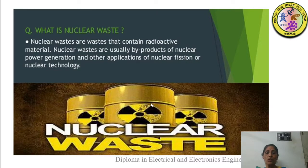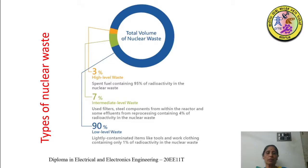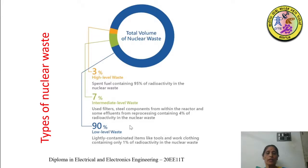This is the symbol for nuclear waste. You can see the total volume of nuclear waste represented here. You can see the blue bag — that is the low level waste. 90% of the waste by volume is low level waste. Lightly contaminated items like tools and work clothing contain only 1% of radioactivity in the nuclear waste.